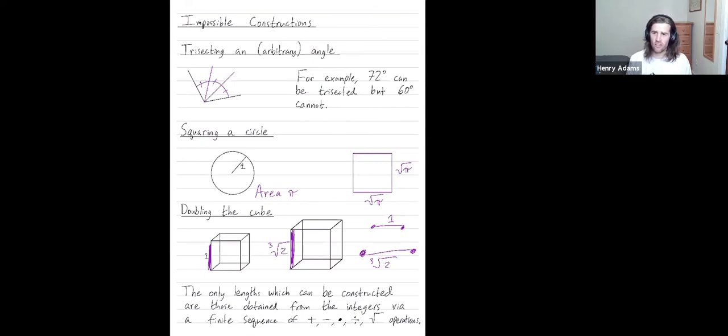Only much later, after abstract algebra, groups, fields, rings, and Galois theory, which is a more advanced topic in algebra, only once groups, rings, field algebra was invented could mathematicians finally prove that these constructions are impossible.